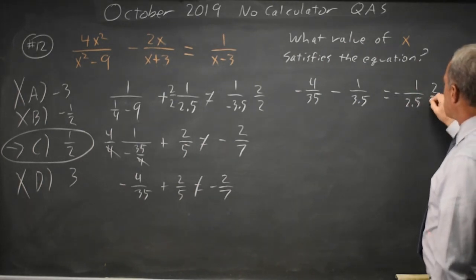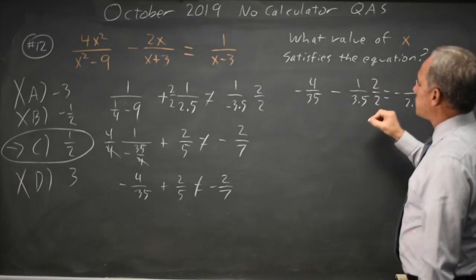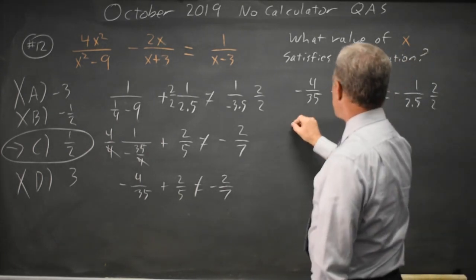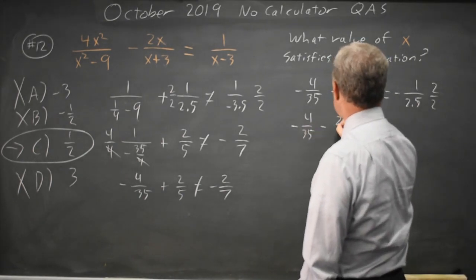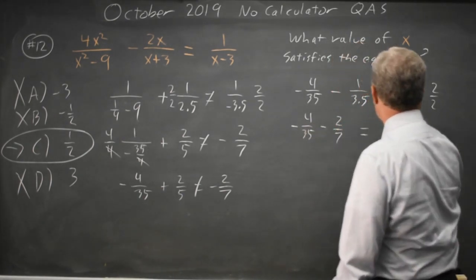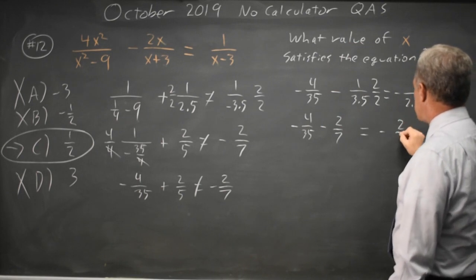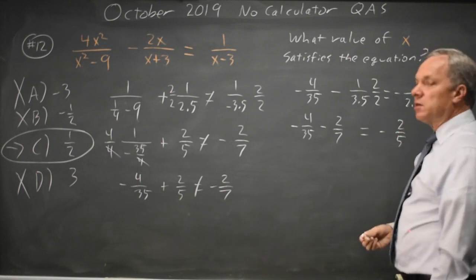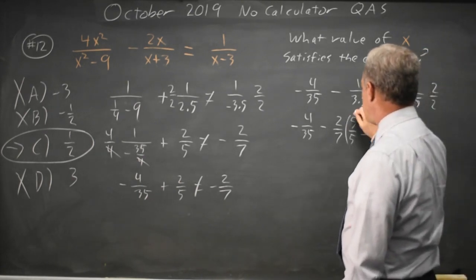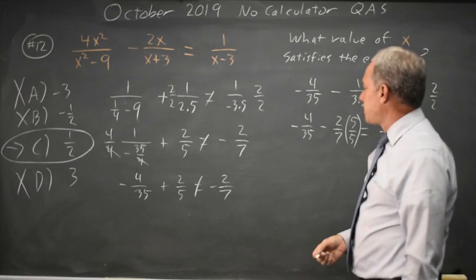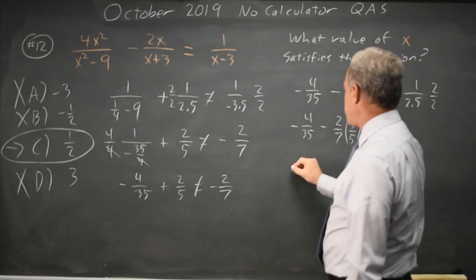I'm going to multiply by 2 over 2 to get whole numbers in my numerator and denominator. Negative 4 over 35 minus 2 over 7 equals negative 2 over 5. Let's get a common denominator on the left. I'll multiply by 5 over 5, and that'll give me a denominator of 35.